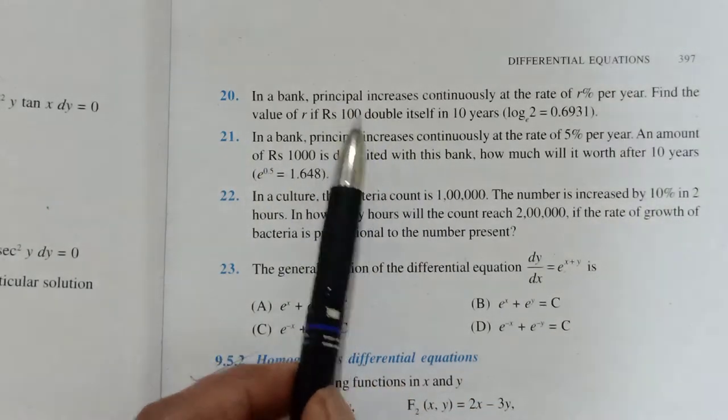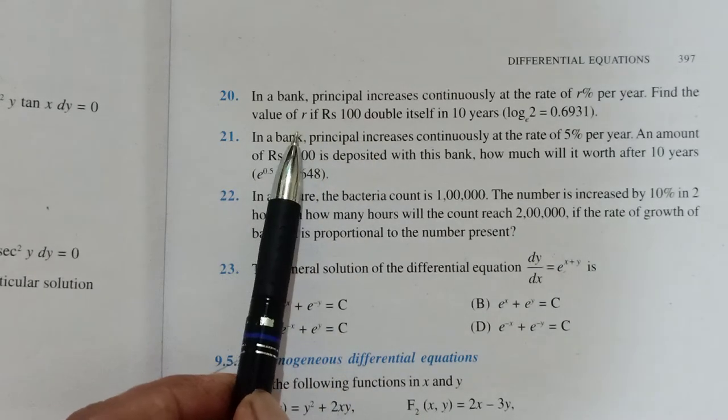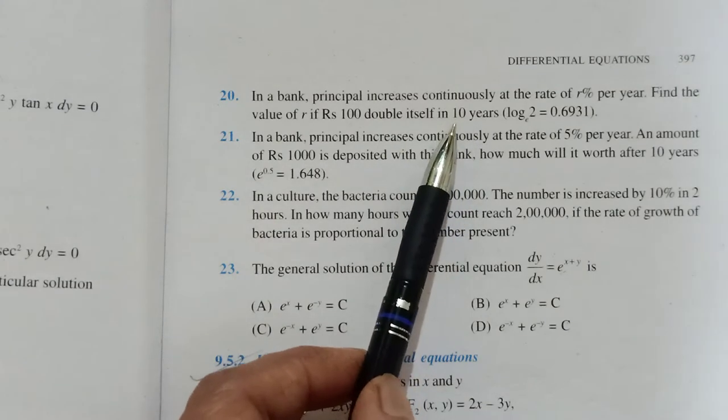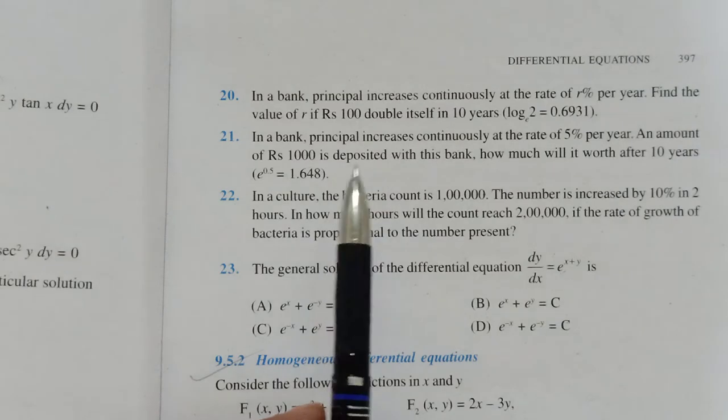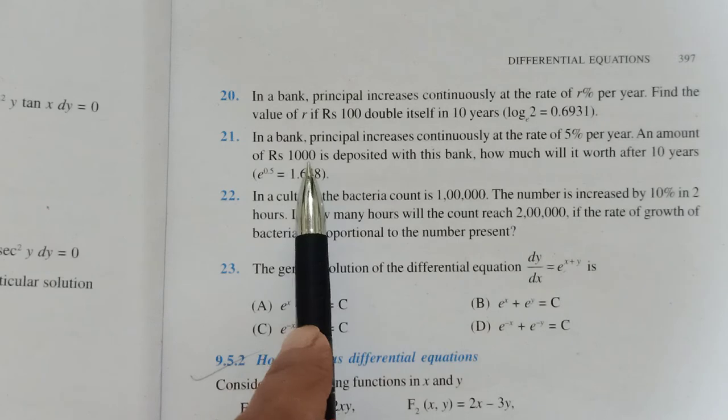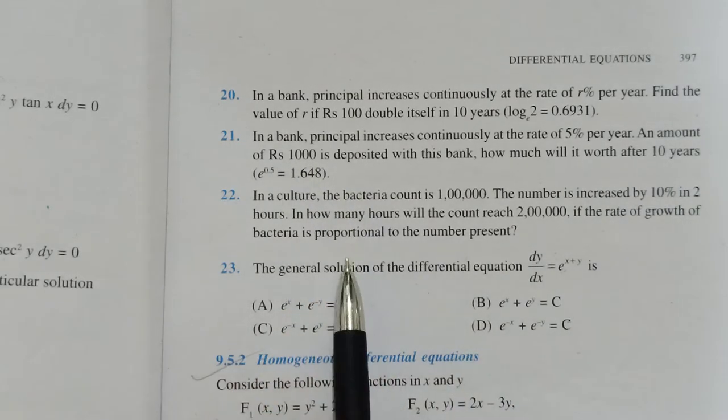So in this question, the amount in both cases initially was 100, later it became 200. So initially we take T as 0, and later T was given as 10. Here your principal has to be taken out in the second case. So when T is 0, P will be taken as 1000. When T is 10, what will be P?